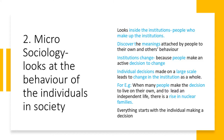Interpretive sociologists believe that institutions change because people make an active decision to change. For example, when many people make the decision to live on their own and lead an independent life, there is a rise in nuclear families. In other words, the institution changes — but how did it start? Everything starts with many individuals making a decision to behave in a particular way. That is why, if we want to understand change in society, we should also consider the behaviour of people within institutions, and this is what micro sociologists are concerned with.